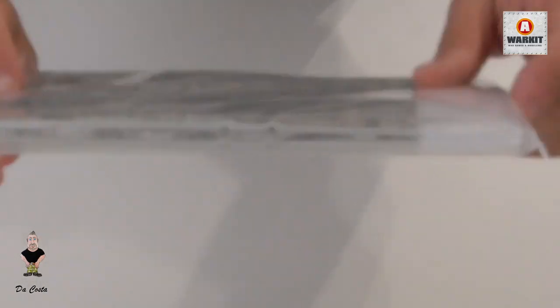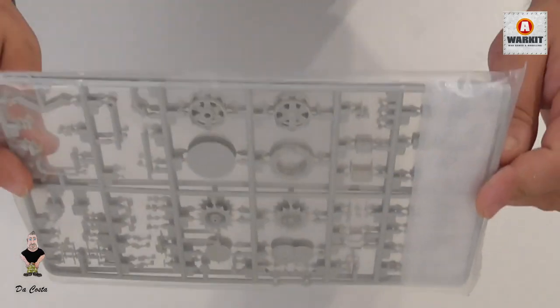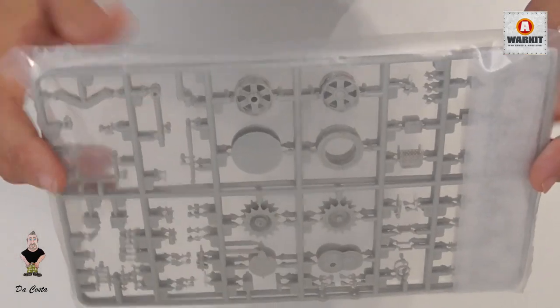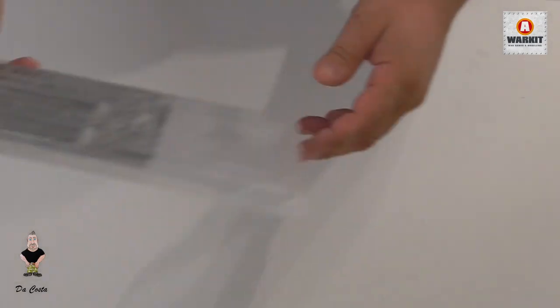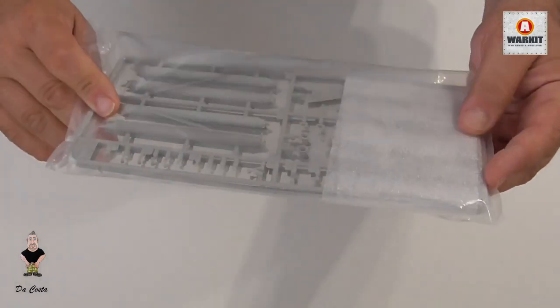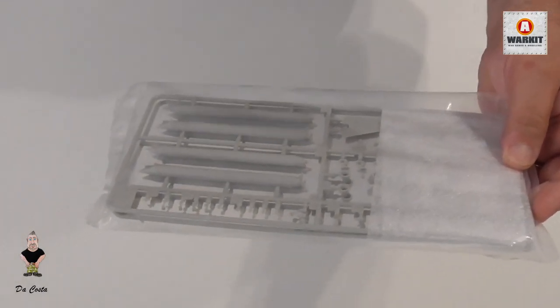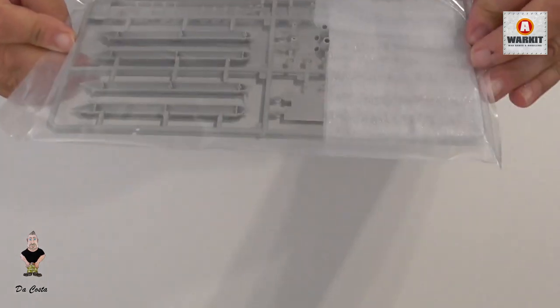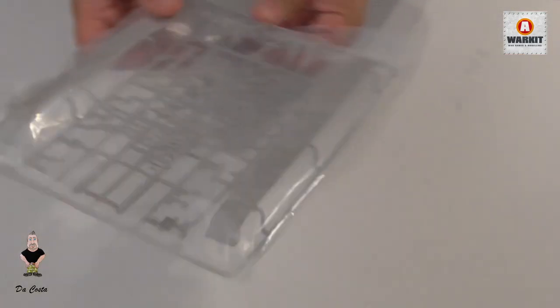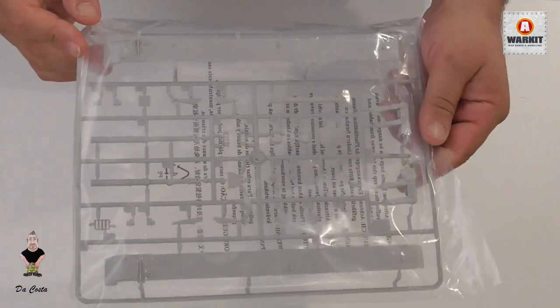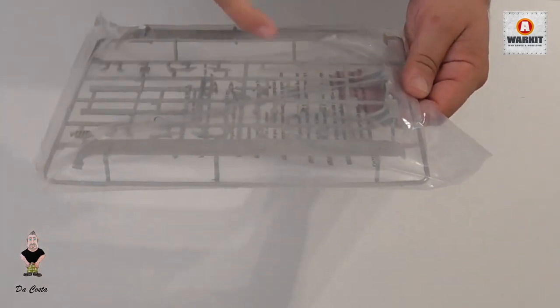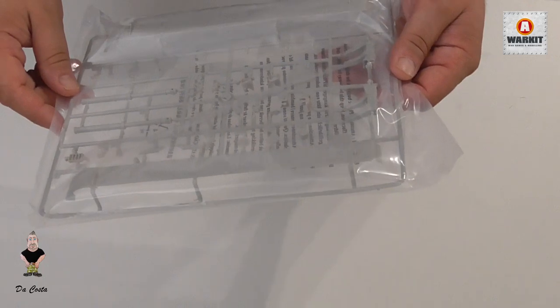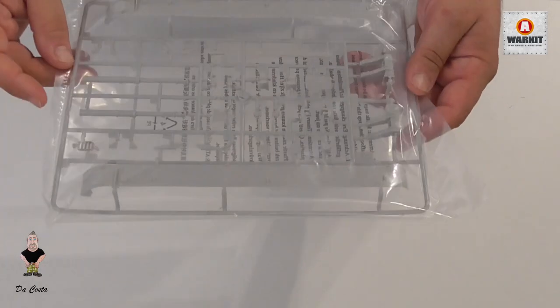More parts - these bags are closed so I'm not going to open them. Two more equal sprues. Now we have the side skirts and some parts of the headlights, some vents here.